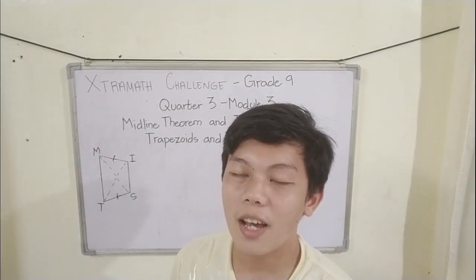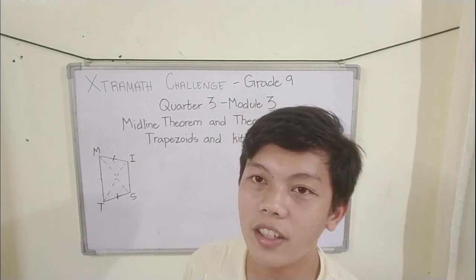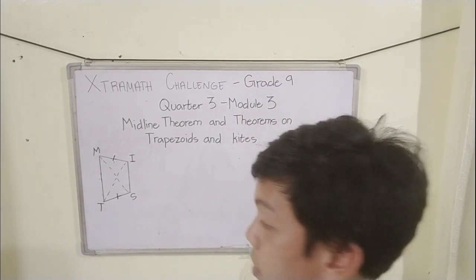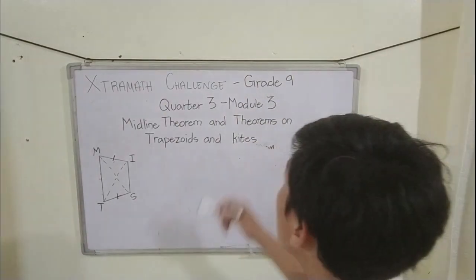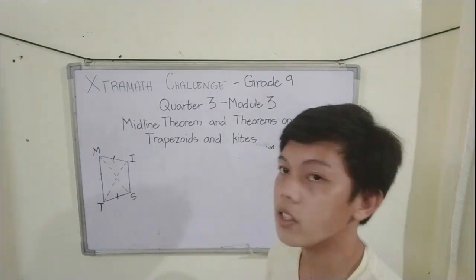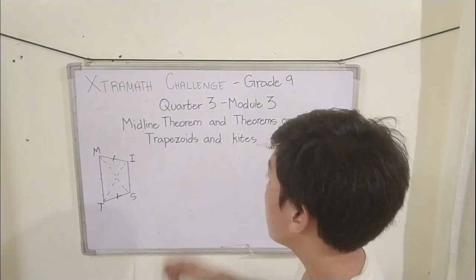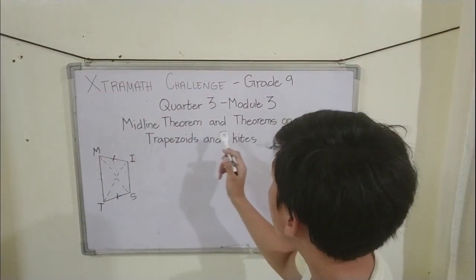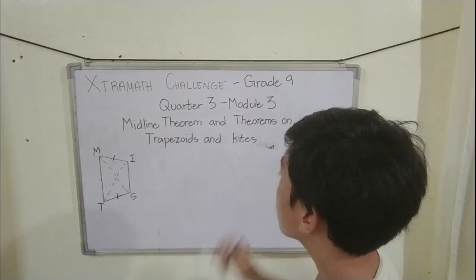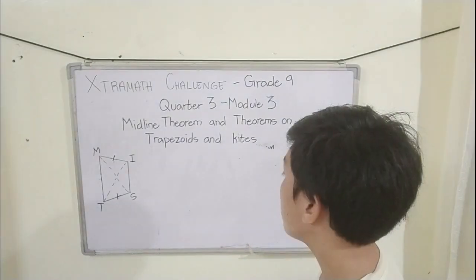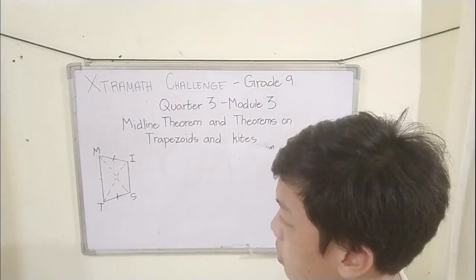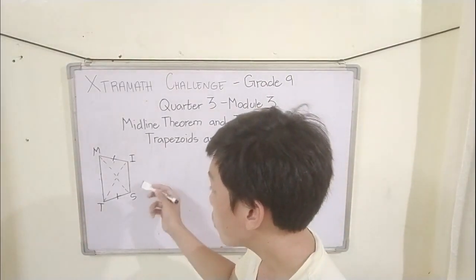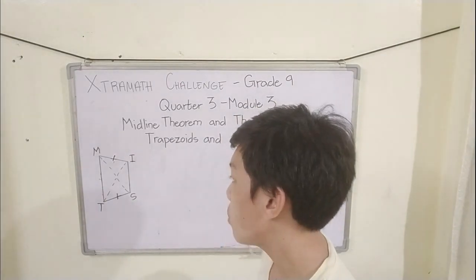Hello mga Caviters! I'm Habiter Owen on our eczema challenge. Our eczema challenge is about grade 9 lessons, and the lesson is all about the midline theorem and theorems on trapezoids and kites. We have here an example of an isosceles trapezoid.